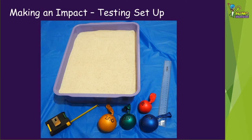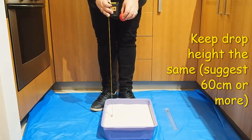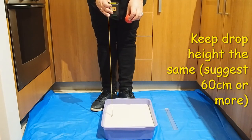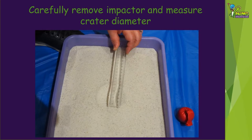To start your testing, fill the large tray with sand to at least 5cm in depth and make the surface level and smooth — you can use the ruler to do this. Using the tape measure or long ruler, measure your drop height above the tray and drop the first impactor by releasing it from that height. Carefully remove the impactor, trying not to disturb the sand too much. Look closely where the crater edge is and measure the diameter at the widest point. Write your measurement down in a table.